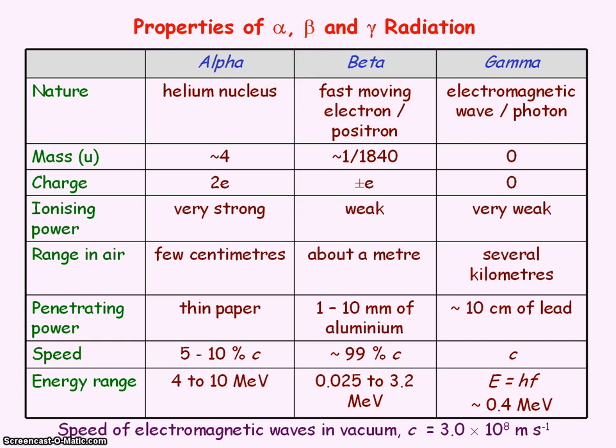Whereas a beta particle, you have beta minus particles, which are fast moving electrons or highly energetic electrons, and you have beta positive particles, which are fast moving positrons, highly energetic positrons. And positrons are positively charged electrons.